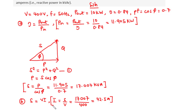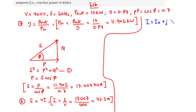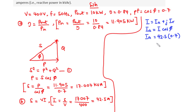From the supply current, we can find the active and reactive components. The supply current can be expressed as I = I_A + jI_R, where I_A is the active component and I_R is the reactive component. The active component I_A = I × cos(φ) = 42.5 × 0.7 = 29.75 amperes.